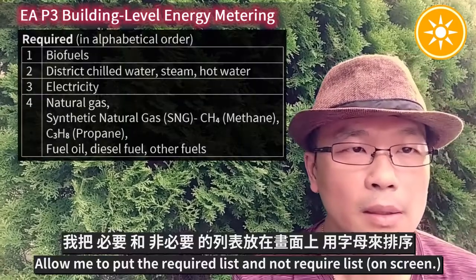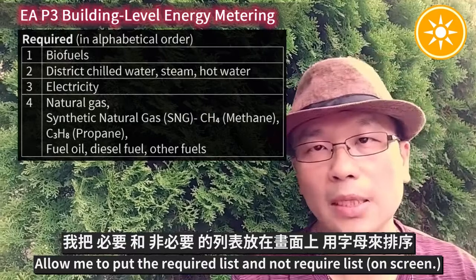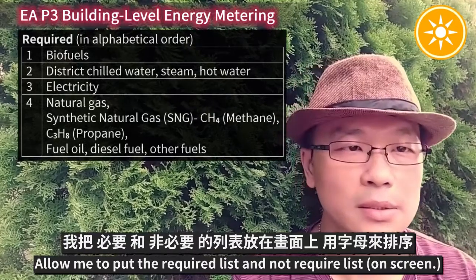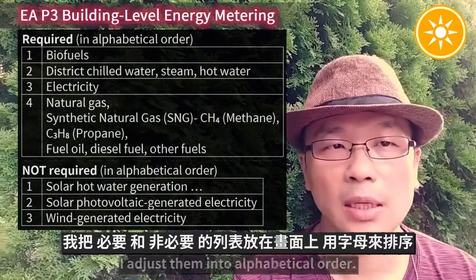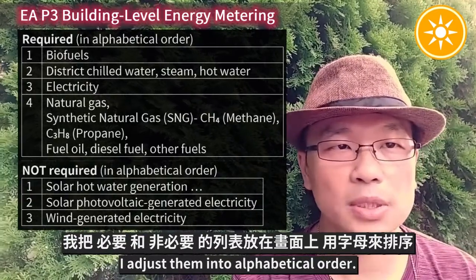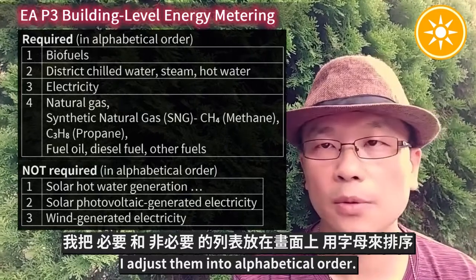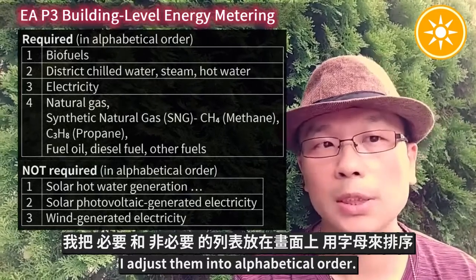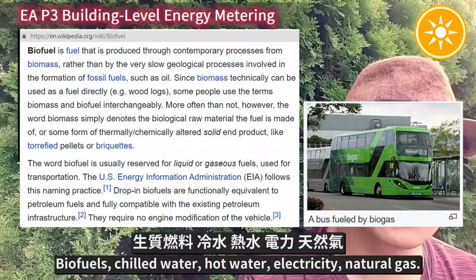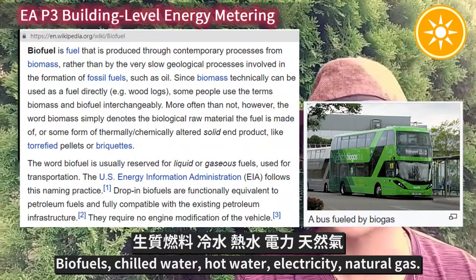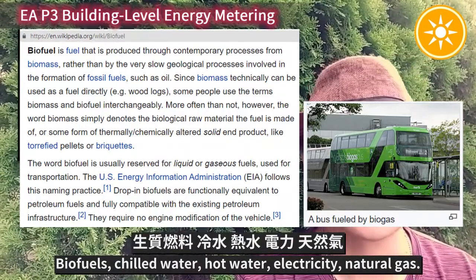Allow me to put the required list and the non-required list — I've adjusted them into alphabetical order. The required energy types include: biofuels, chilled water, hot water, electricity, and natural gas.